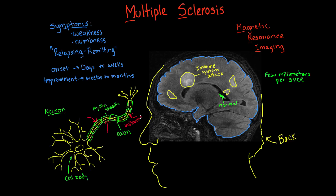So the inflammation actually makes the myelin go away? Yes — the immune system causes this area of inflammation and specifically targets and strips that myelin off the axons of neurons. When it takes away that myelin, those neurons can't transmit information down their axon very well, and whatever function those neurons were performing — whether telling muscles to contract or carrying sensory information — the person will notice that as weakness or numbness. This inflammation happens over days to weeks.